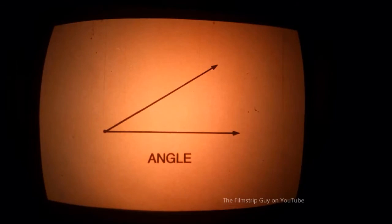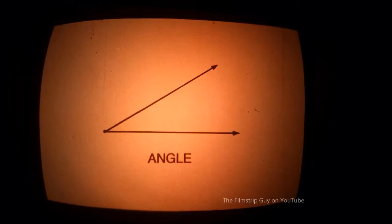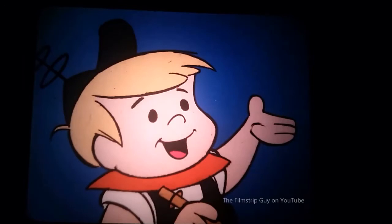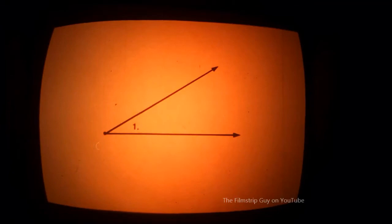The geometric definition of an angle is two rays with a common endpoint. The rays are the sides of the angle. Angles are often labeled at three points. A letter is placed on each ray and the common endpoint, which is called the vertex. The vertex letter is always used in the middle of the angle name. This angle is angle ABC. A small number placed inside the angle would also name it. This is angle one.